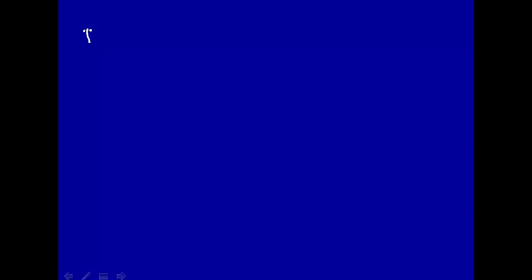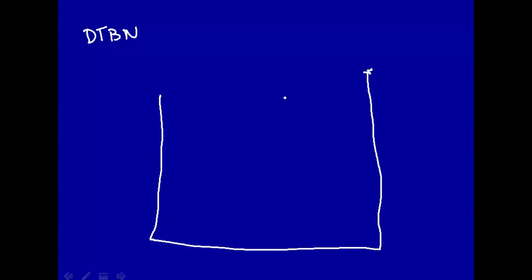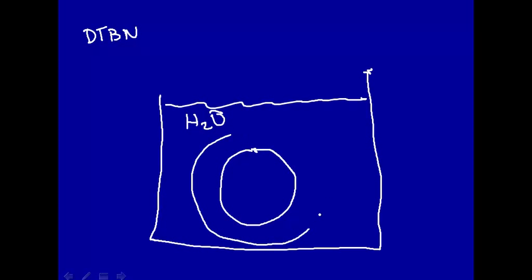All right, so let's do something with this di-tertiary butyl nitroxide. Let's have, say, a sample. Here's a sample here, and this is an artist's conception. It's an aqueous sample, so we have H2O here, and inside this sample we've added a model membrane, say a lipid bilayer membrane. It's not really that big compared to the sample size.